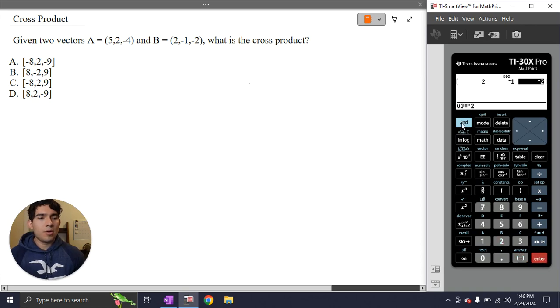And now we can go second and hit quit and it will take us back to the main screen of the calculator. So what we just did there is we put our vector A and vector B into our calculator. And now we need to actually run the cross product operation.